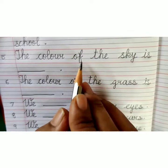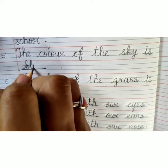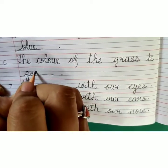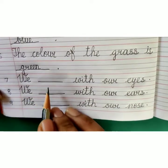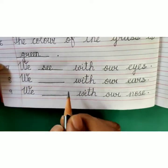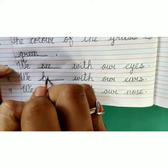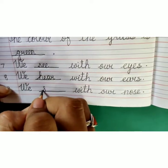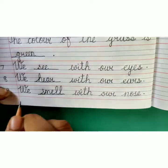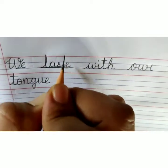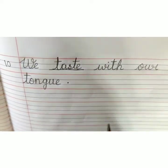Number 5: The colour of the sky is B-L-U-E, blue. Number 6: The colour of the grass is G-R-E-E-N, green. Number 7: We see — V-S-E-E — with our eyes. Number 8: We hear — V-H-E-A-R — with our ears. Number 9: We smell — S-M-E-L-L — with our nose. Number 10: We taste — T-A-S-T-E — with our tongue.